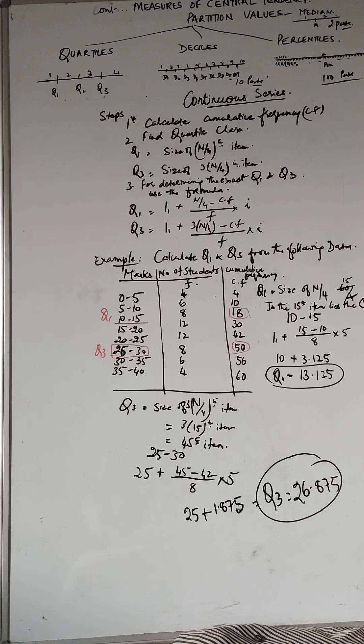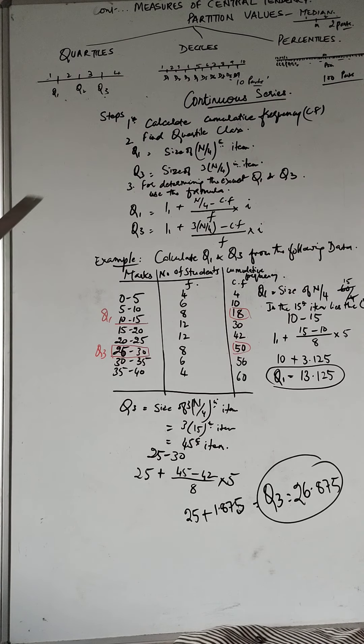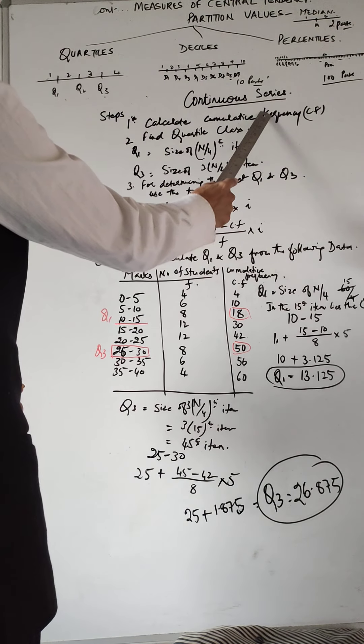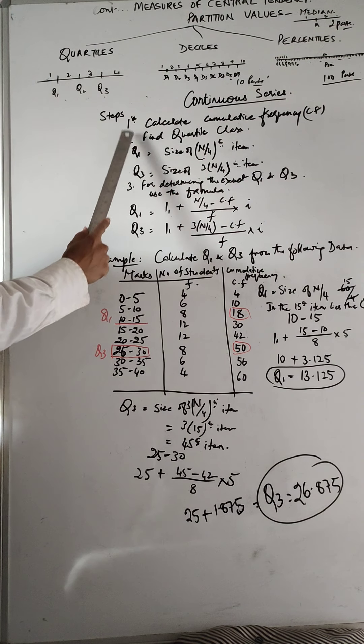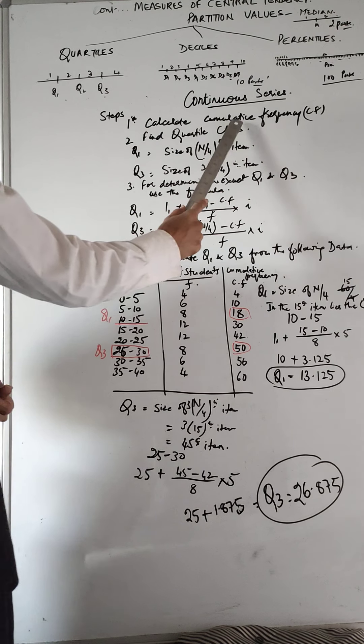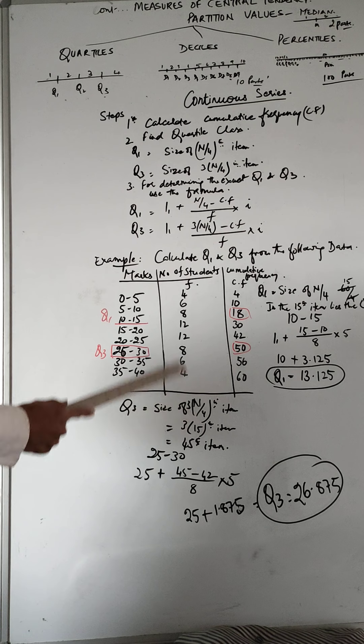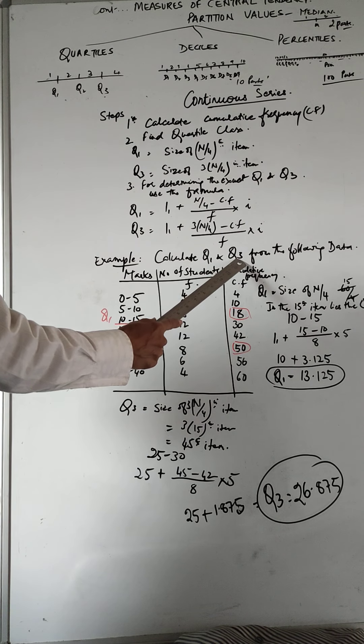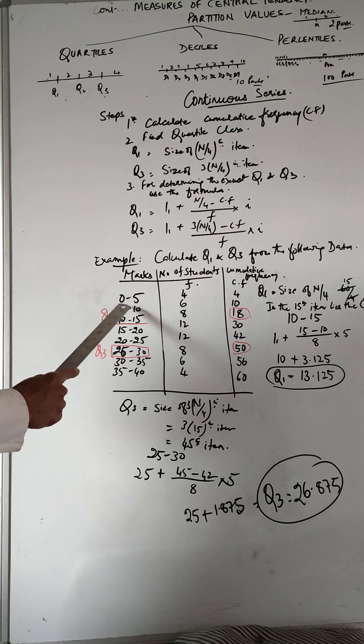So we finished with quartiles and deciles in the discrete series. Now we are going to do it in the continuous series. So what are the steps? First is calculate cumulative frequency and I am going to show the steps along with it. This is the example: calculate quartile 1 and quartile 3 from the following data. So these are the marks, 0 to 5,